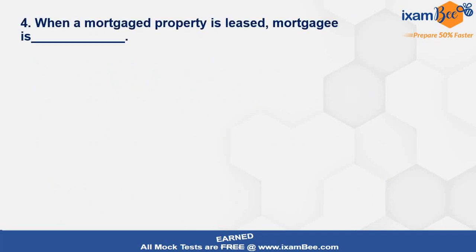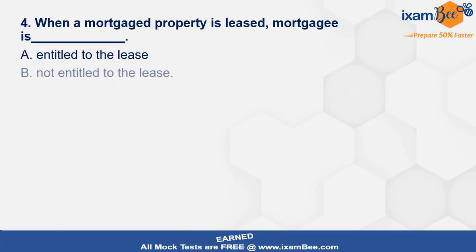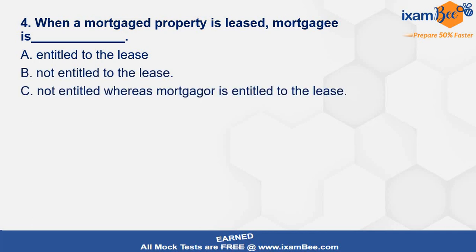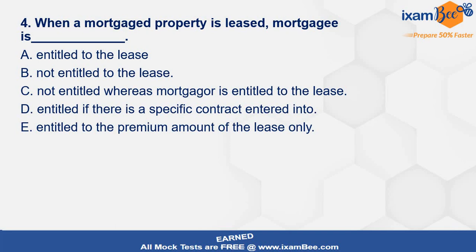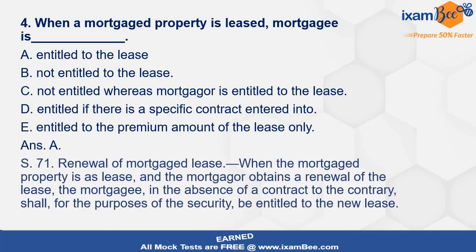When a mortgaged property is leased, the mortgagee is not entitled to the lease, whereas the mortgager is entitled to the lease if there is a specific contract entered into, and is entitled to the premium amount of the lease only. Renewal of mortgager's lease is covered under Section 71 of the TPA, and that can also be covered in examinations.